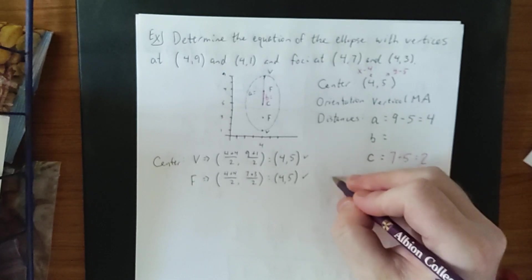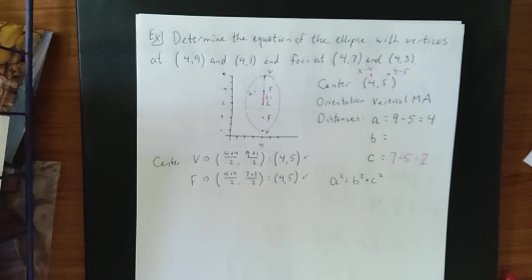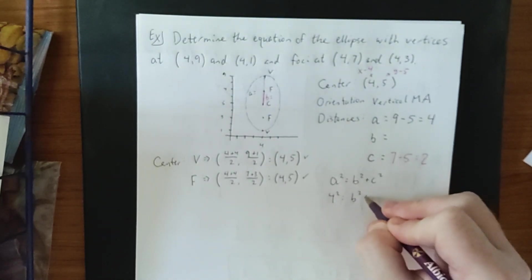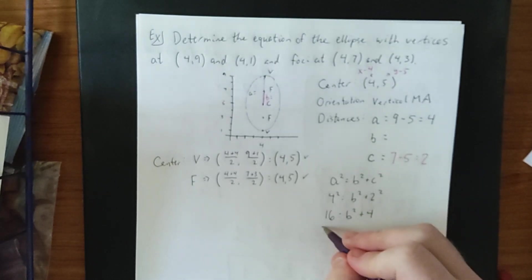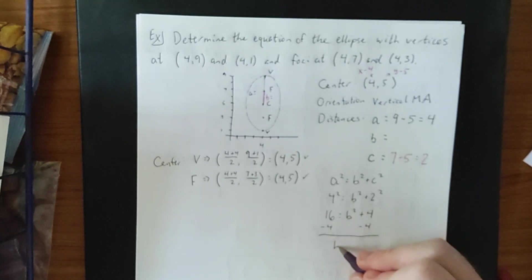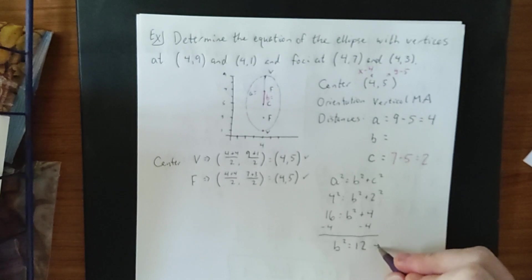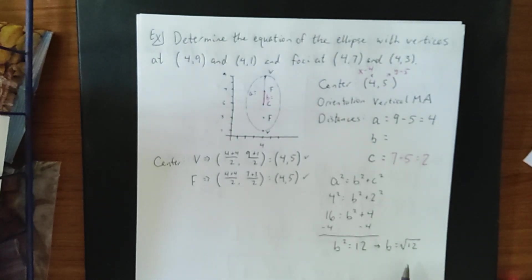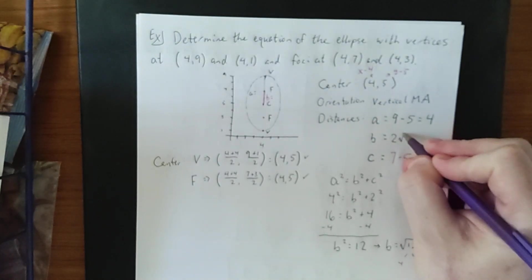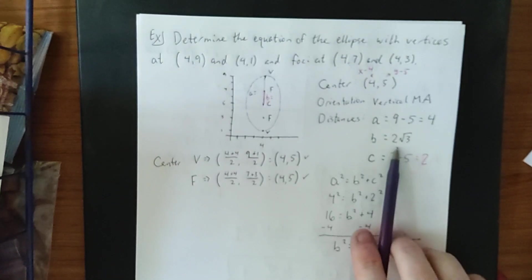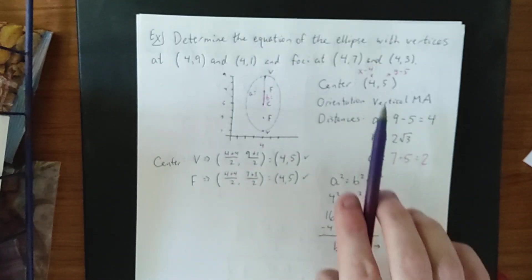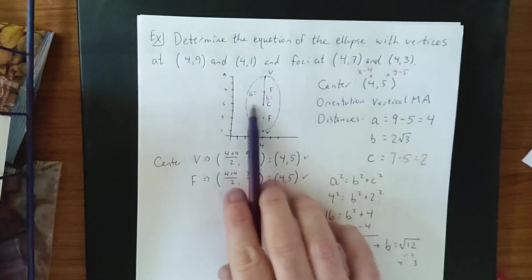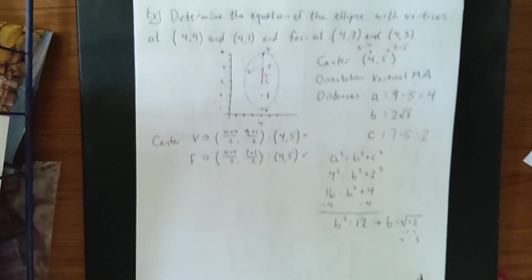To calculate b, we use the Pythagorean theorem for ellipses: a squared equals b squared plus c squared. So 4 squared equals b squared plus 2 squared, giving 16 = b squared + 4. Subtracting 4 from both sides: b squared = 12. If needed, b equals the square root of 12, or 2 root 3. For the equation we only need b squared, so we keep it as 12.